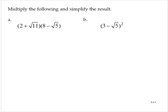Multiply the following and simplify the result. Exercise A, we have 2 plus the square root of 11 multiplied by 8 minus the square root of 5. So these look like binomials, and so we will apply the distributive property and FOIL this out, however you want to think of it.